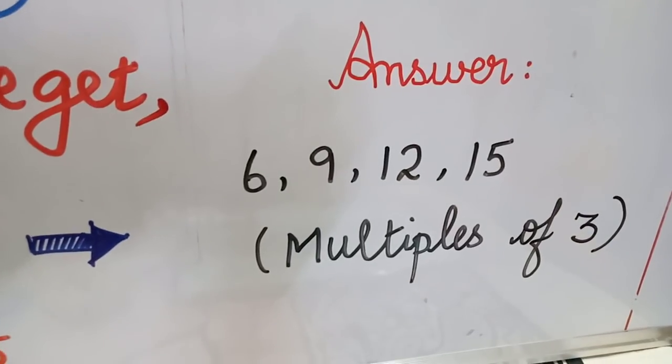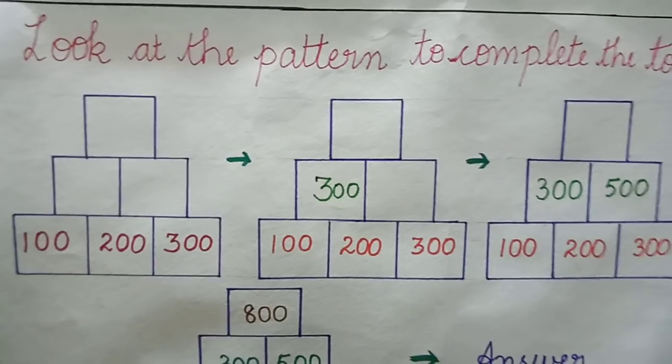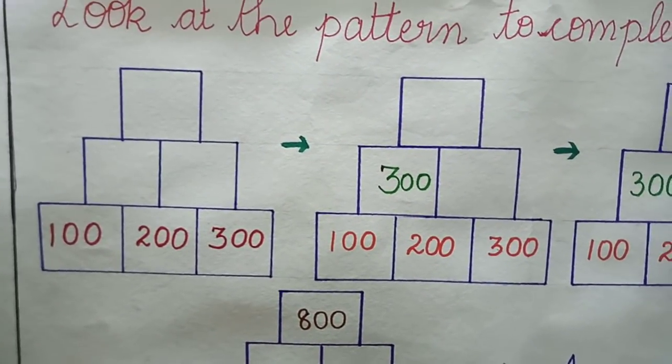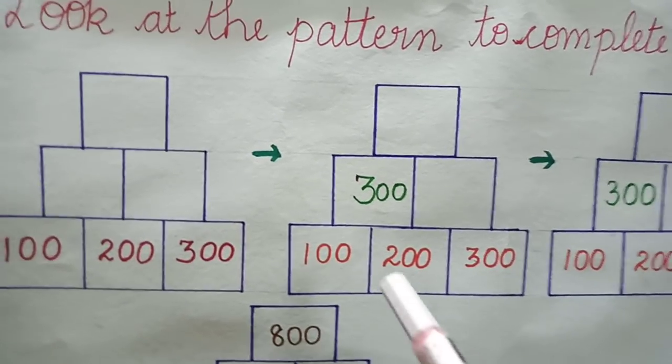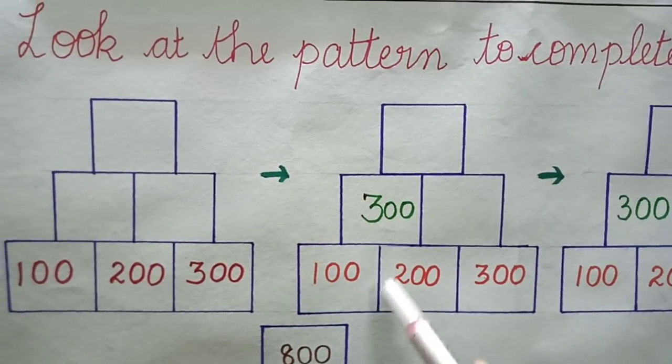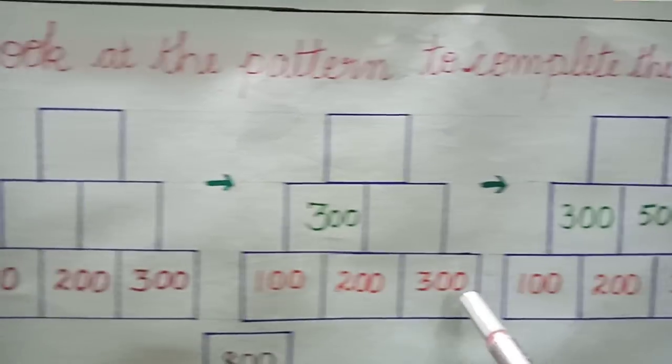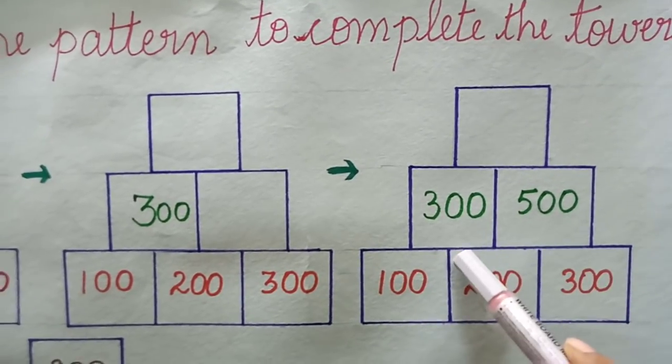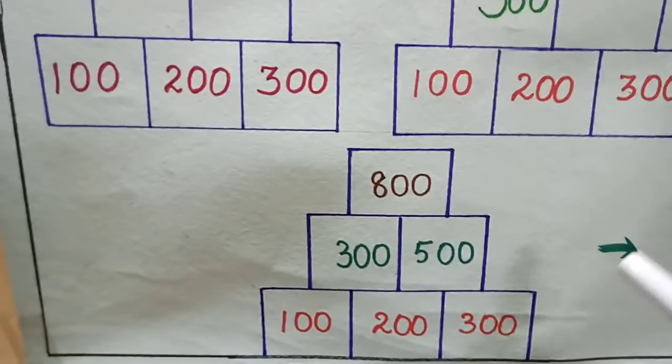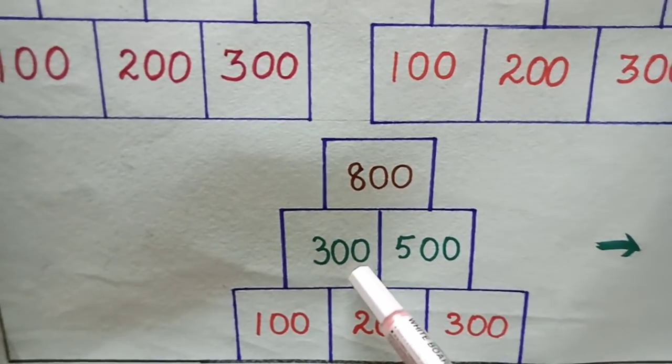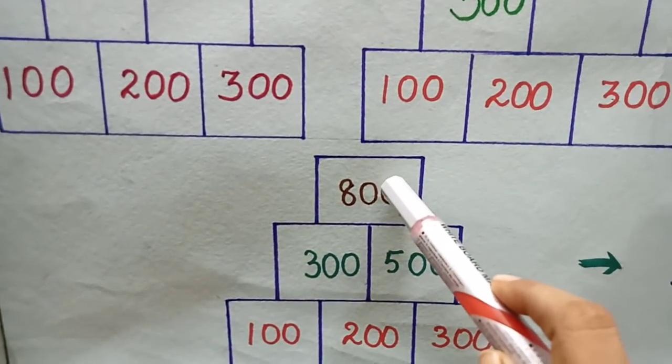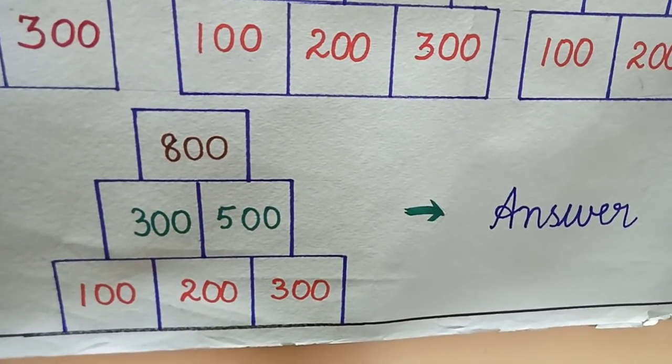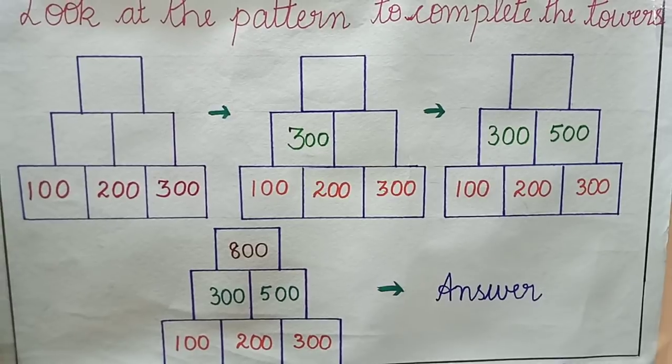Our next question is: look at the pattern to complete the task. And here is our chart. We need to start with the base of the chart. First step: we need to add 100 plus 200 gives you 300. And the next step, we need to add the next two numbers: 200 plus 300 gives you 500. So keeping this in mind, we are moving to the next step. Here we are going to add 300 plus 500 gives you 800, and it is placed on the top of the chart. And thus this is your answer. This is the procedure to complete the pattern in the task.